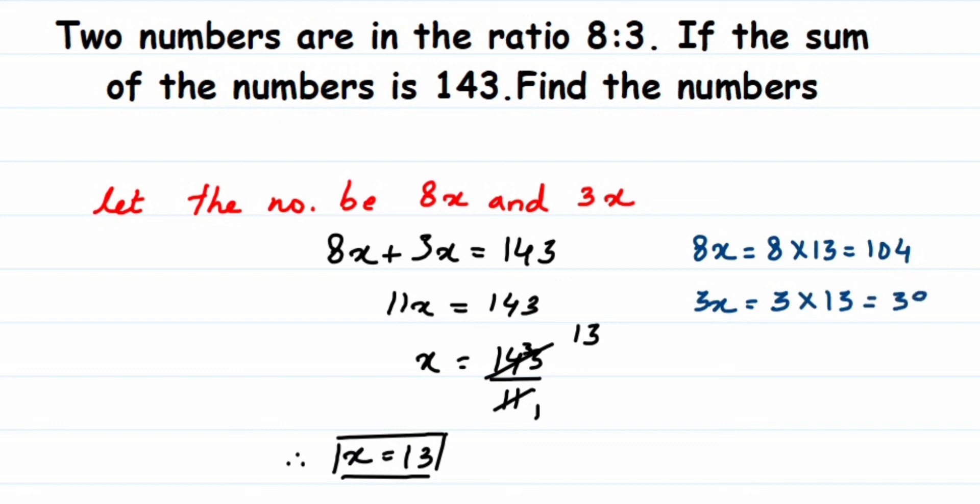You can cross-check your answer. I'm going to just add 104 and 39—let's see what we get here. So 9 plus 4 is 13, 1 plus 3 is 4, and then 1—143. You can cross-check your answer in this way.